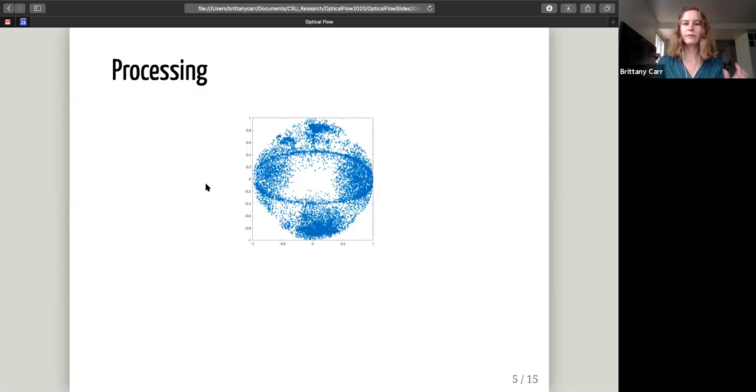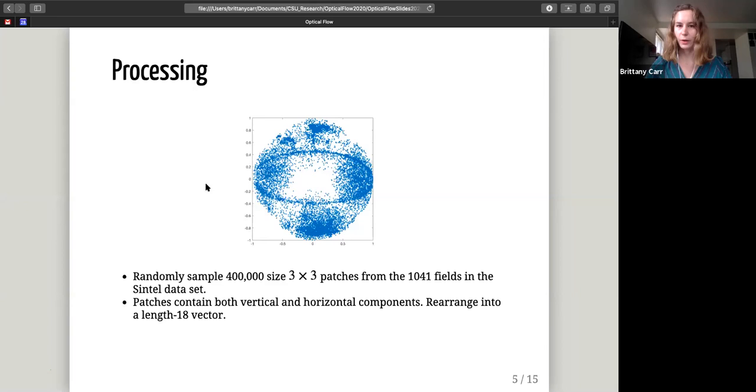Okay, so we have this huge dataset and it's about a 30 minute film. So we have a bunch of scenes to pick from. The first thing we're going to do is randomly sample 400,000 points of three by three patches from the 1041 fields in the Sintel dataset. So we have all of these optical flow vector fields, and from there we're going to pick three by three patches and look at what those are going to show us about our data. The patches contain both vertical and horizontal flow components. So we have movement that could be horizontal or vertical or a combination of the two. So we're going to take all of that information for each patch and we're going to rearrange that into a length 18 vector.